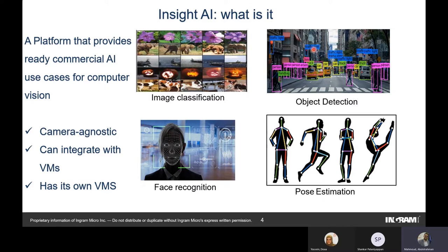The second task is object detection, which is the computer's ability to not just classify a photo but to determine the location of objects within it — for example, detecting a car at a specific location in the image. Object detection can detect multiple objects simultaneously, making it more suitable than classification for scenes containing people, buildings, and streets.